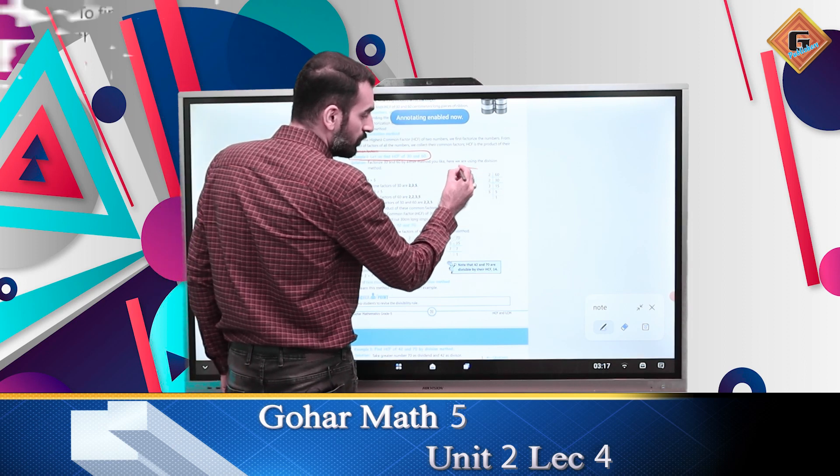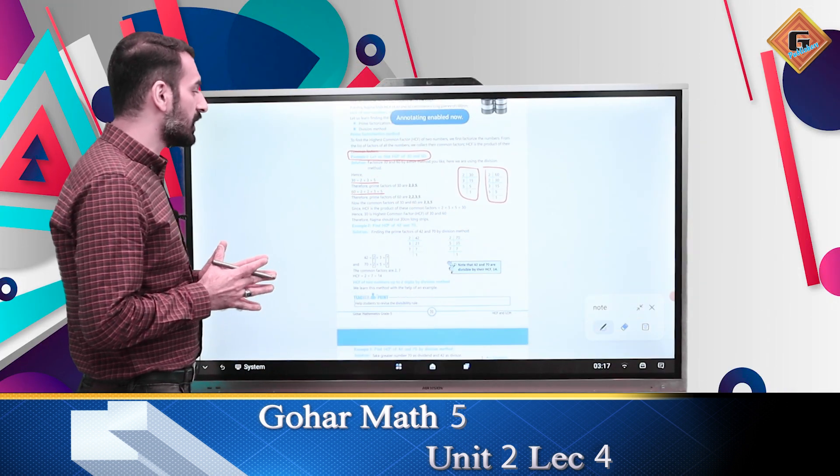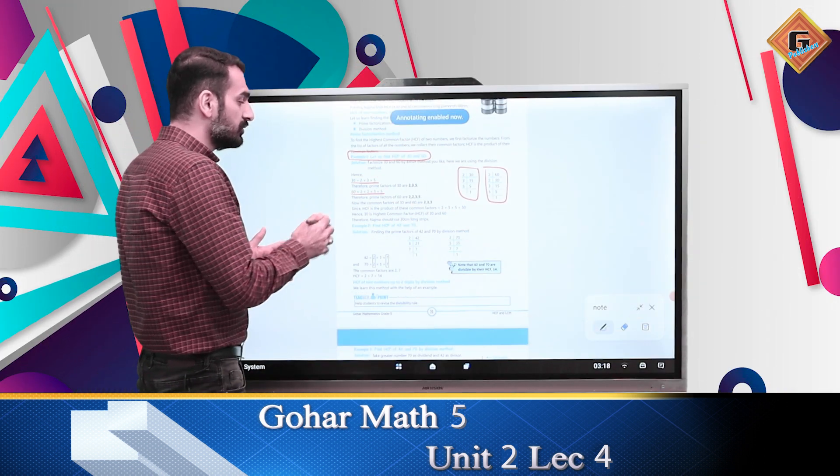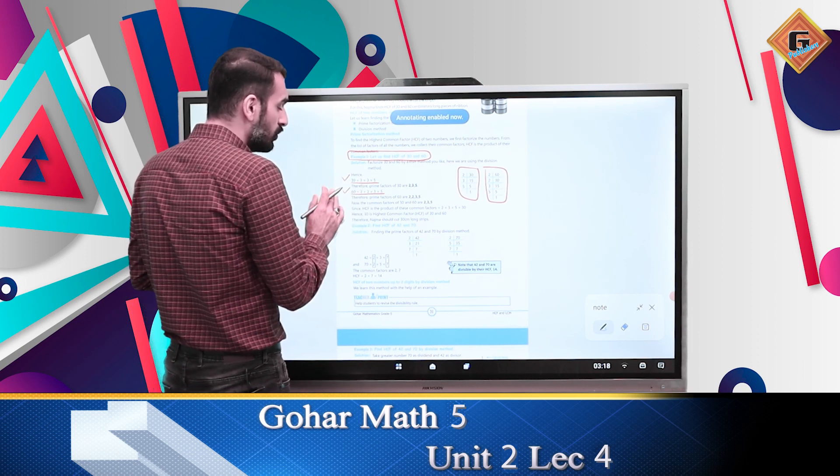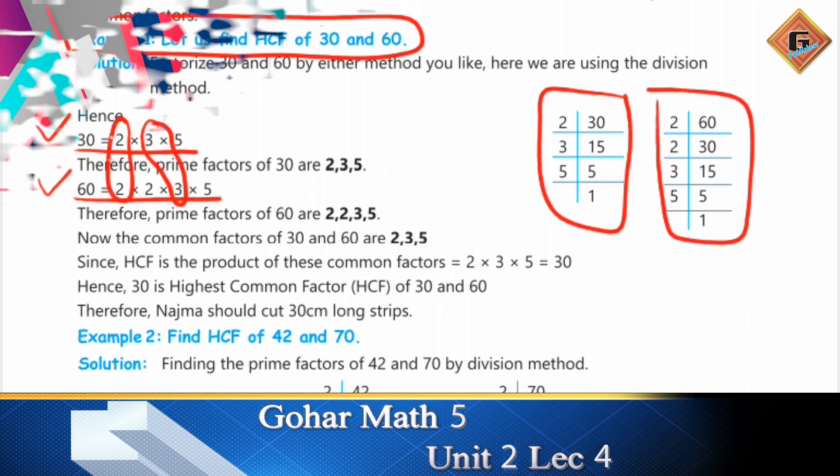Now we have two prime factors. The prime factors of 30 are 2, 3, 5. The prime factors of 60 are 2, 2, 3, 5. Now the common factors are: 2 is common, 3 is common, and 5 is common.